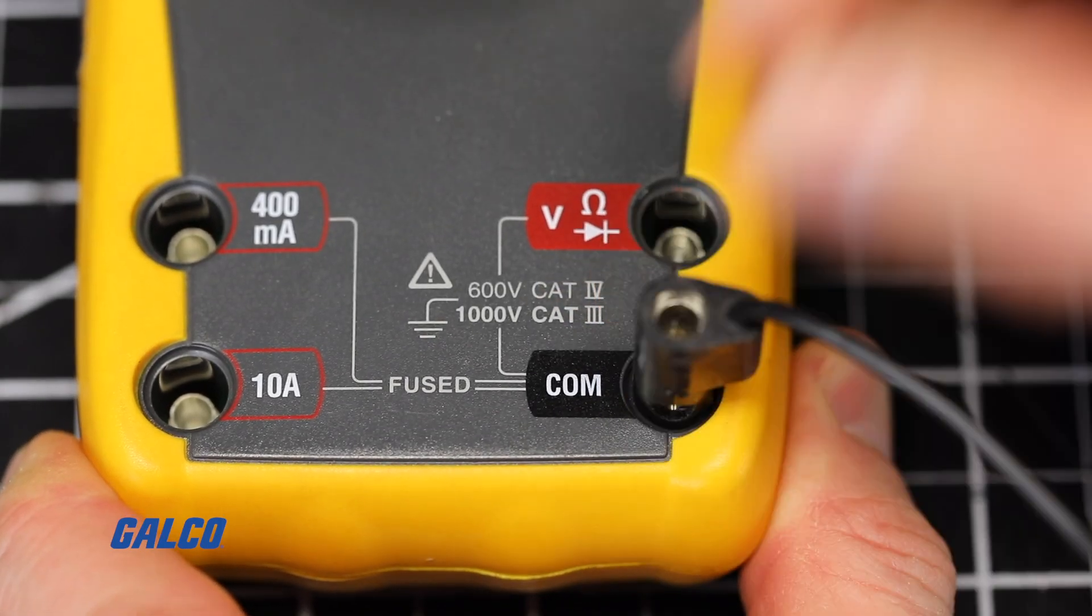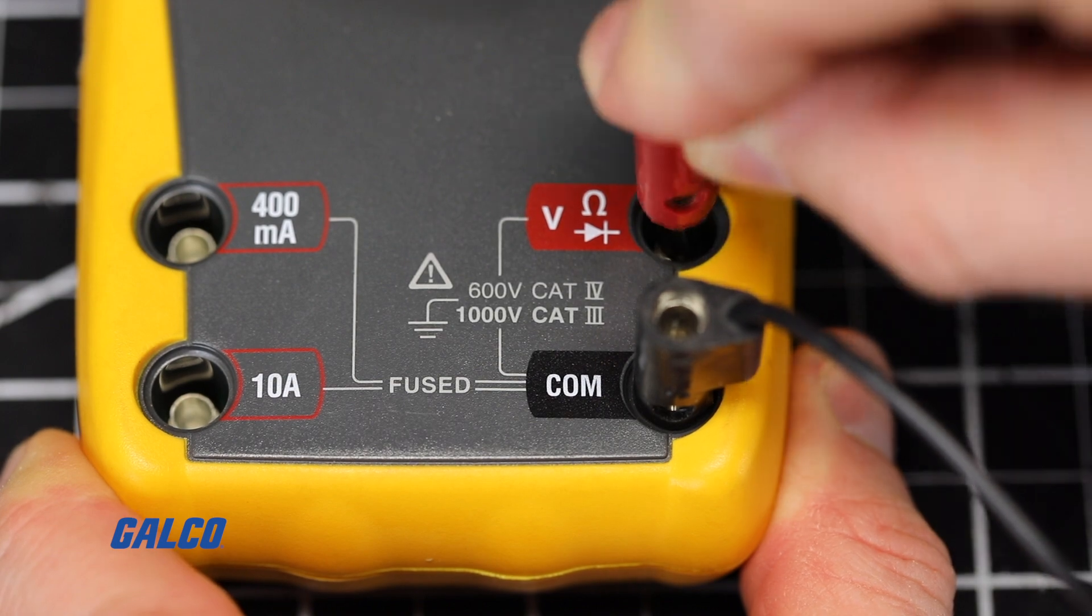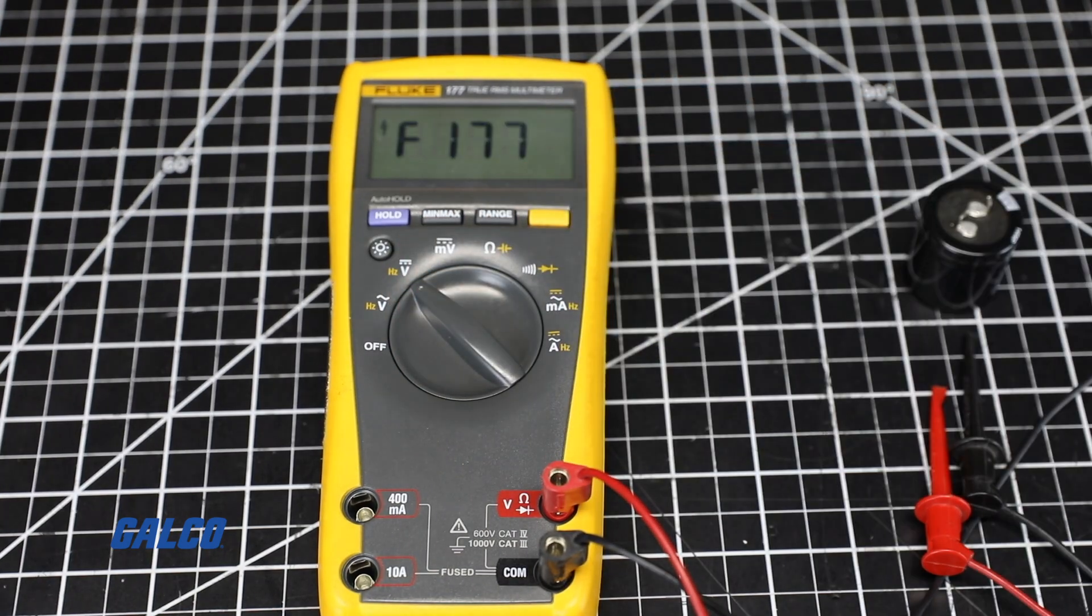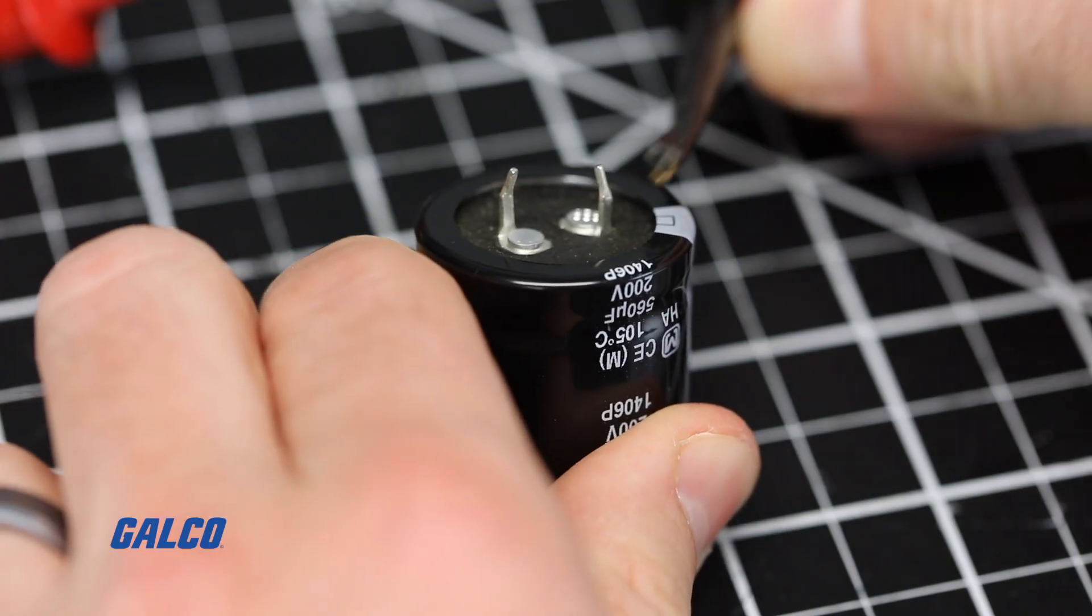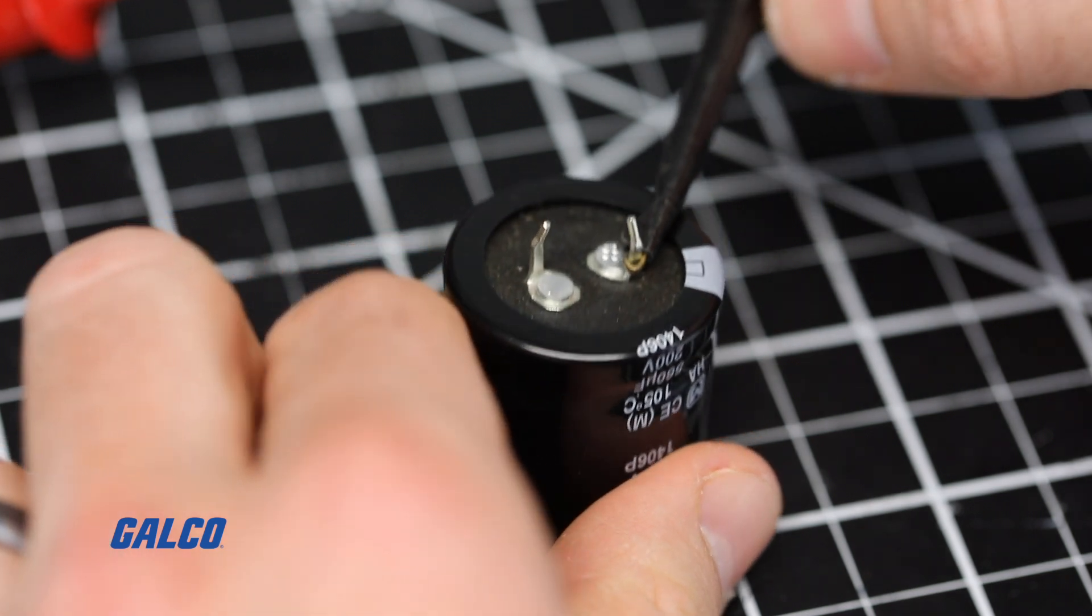To begin, set up your multimeter for taking a DC volts measurement. You can now test the capacitor to measure its stored voltage.